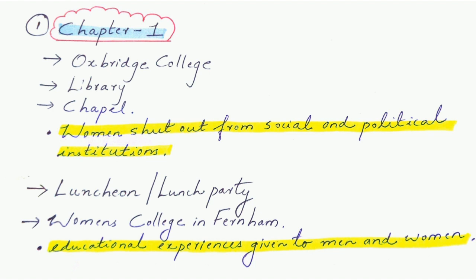When she is running through the lawn and the grass, the security guard at Oxbridge College comes and scolds her, telling her to keep off the grass, because the grass is only meant for male students and scholars. Here she faces the first discrimination. She is struggling to hold onto her bright idea but faces difficulties. She then decides to go to the library, but when she reaches there, she is told that a woman can only enter the library with a male fellow or with a letter of introduction. Again, she is denied entry because she is female.